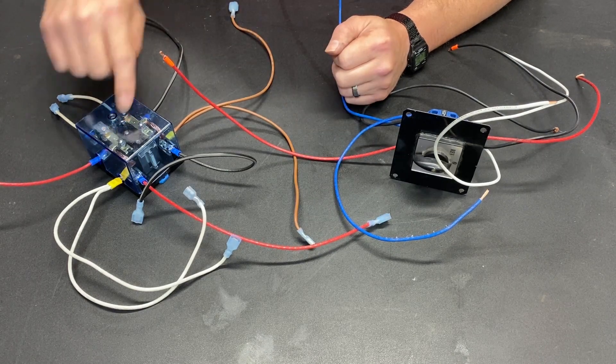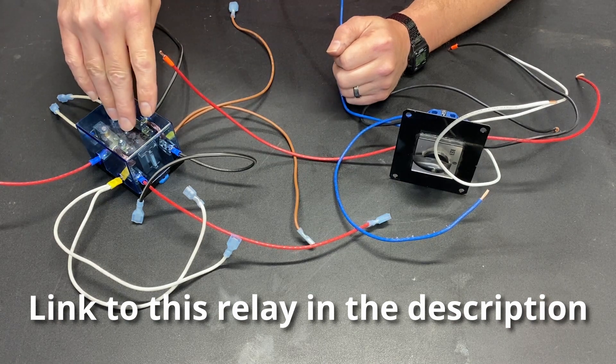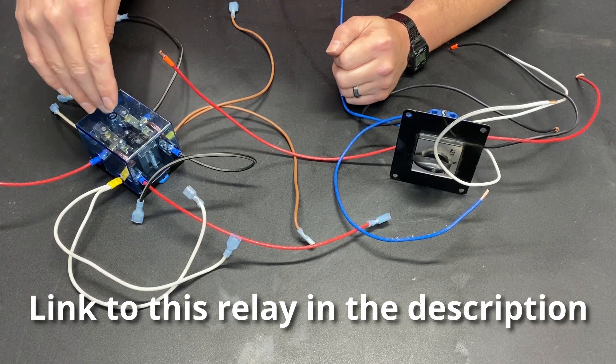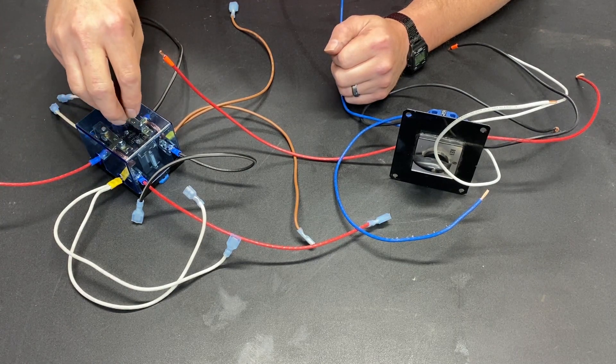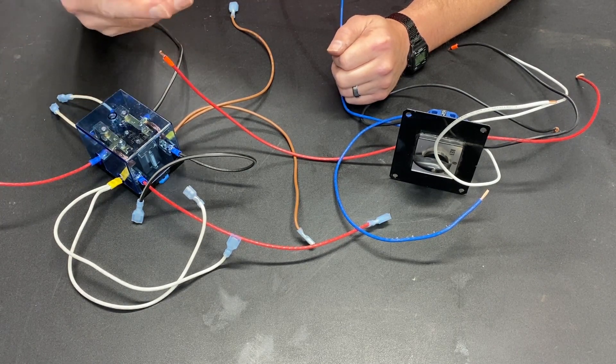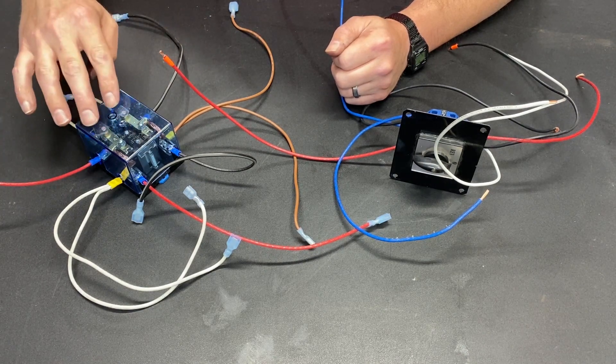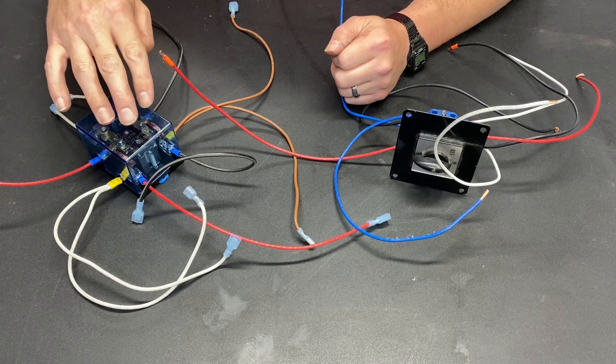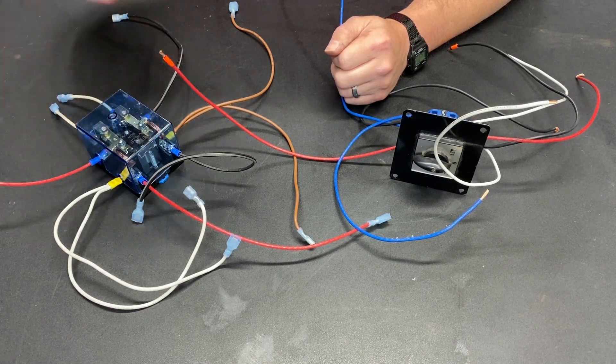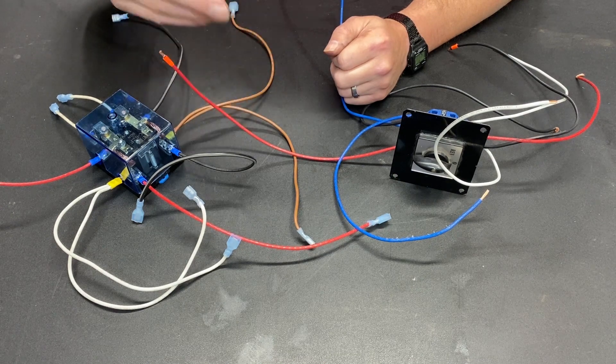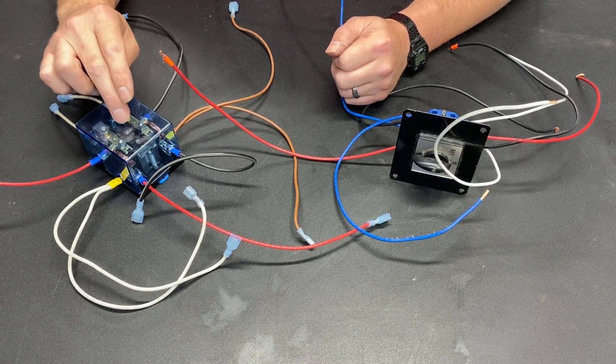So this right here is a relay. It is a double pole double throw relay. You have a normally open and a normally closed setting. So when it's normally closed the switch is in the on position. Then you have the normally open setting where it's in the off position and when you energize the coil on this it switches the two. So the one that was on now becomes off and the one that was off now becomes on. This is the heart of the project.